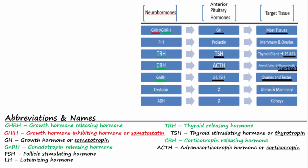Prolactin inhibitory hormone, or PIH — which is just dopamine — is released from the hypothalamus and acts on the anterior pituitary, causing it to stop release of prolactin into the blood. Prolactin causes milk production in the mammary glands and upregulates FSH and LH receptors in the uterus.